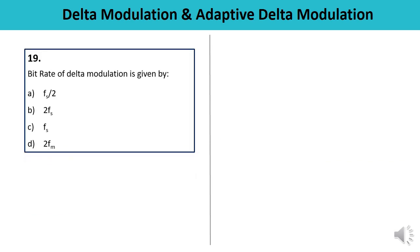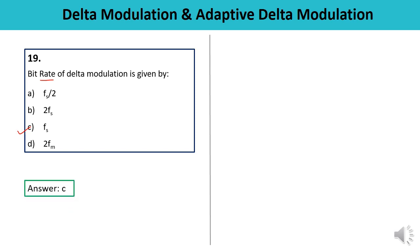Question 19: The bit rate (or signaling rate) of Delta Modulation is given by what formula? The bit rate is denoted by R and equals Fs — the number of bits transmitted per second. To calculate: it is the number of samples per second multiplied by the number of bits per sample. Since Delta Modulation uses 1 bit per sample, the bit rate equals Fs.